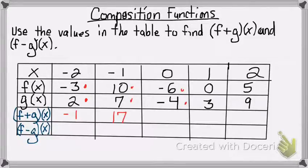Negative 6 plus negative 4 gives me negative 10. 0 plus 3 gives me 3. And 5 plus 9 gives me 14.